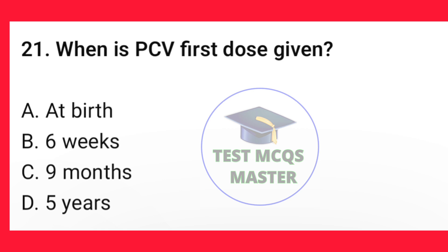Question number 21. When is PCV first dose given? The correct option is B — six weeks.